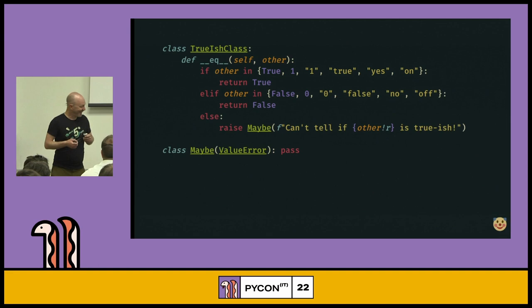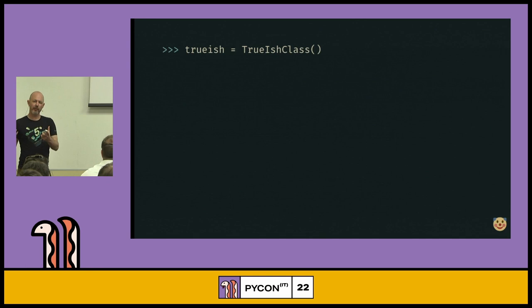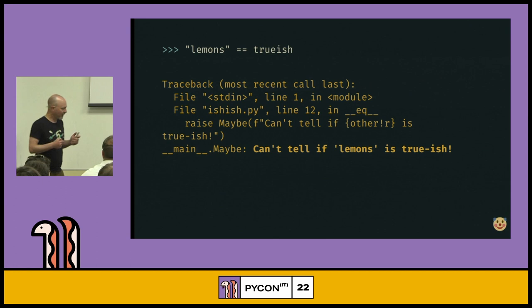So there's our maybe error. So let's try it out. So I take my true-ish. Most of these special class methods only work on instances. So the first thing we have to do is create an instance of our true-ish class, and then we compare it against a boolean true, and true, that's good. And we compare it against a string containing the word true, and that's also considered true, so that's good. And then we compare it to false, and it's false. We compare it to the string false, and it's false. And then we compare it to the string lemons, and we get a maybe error, which is exactly what we want. So this is pretty cool. This is kind of what we were talking about.